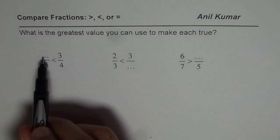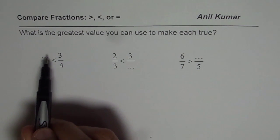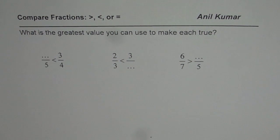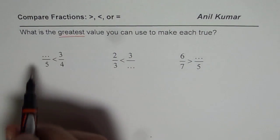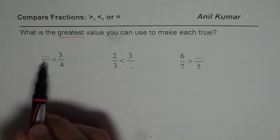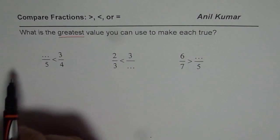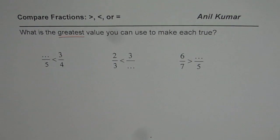First one is, something over 5 is less than 3 over 4, and what that value could be? We are looking for the greatest value. Remember that, the greatest value. If you put 1, 2, 3, 4 out of that, what is the highest number which you can place here, so that this fraction is less than 3 over 4? So that is really the question before us.